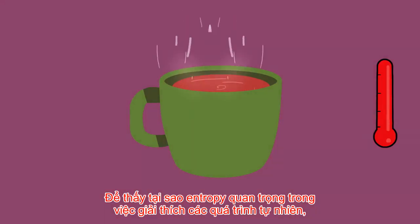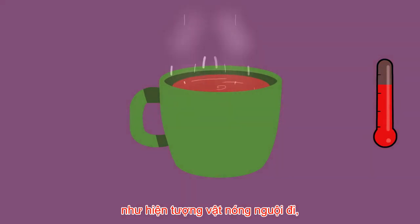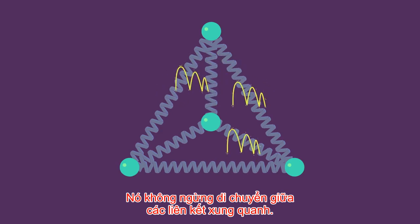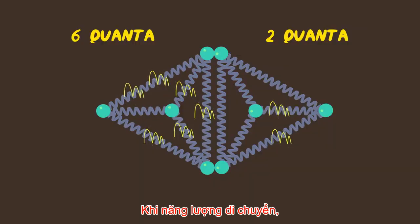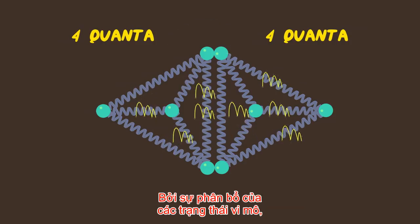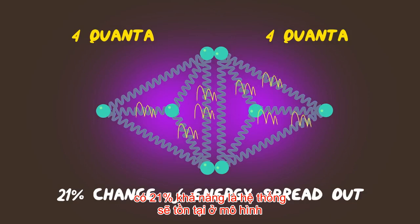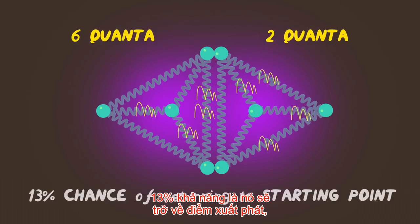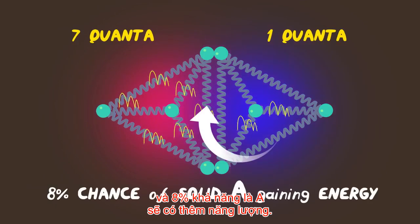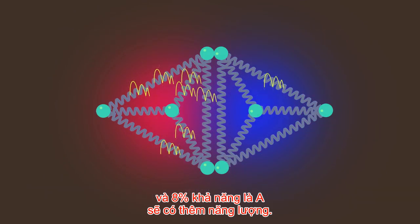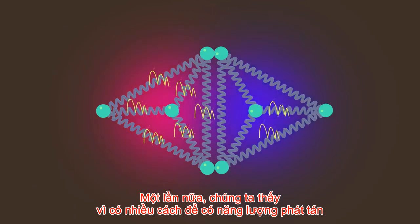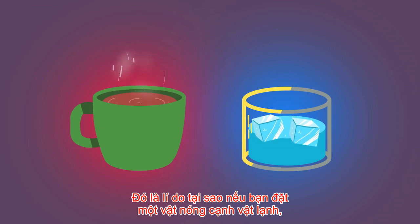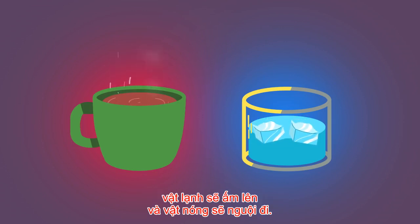To see why entropy is useful for explaining spontaneous processes, like hot objects cooling down, we need to look at a dynamic system where the energy moves. In reality, energy doesn't stay put — it continuously moves between neighboring bonds. As the energy moves, the configuration can change. Because of the distribution of microstates, there's a 21% chance the system will later be in the configuration where energy is maximally spread out, a 13% chance it'll return to its starting point, and an 8% chance that A will actually gain energy. Because there are more ways to have dispersed energy and high entropy than concentrated energy, the energy tends to spread out. That's why if you put a hot object next to a cold one, the cold one will warm up and the hot one will cool down.